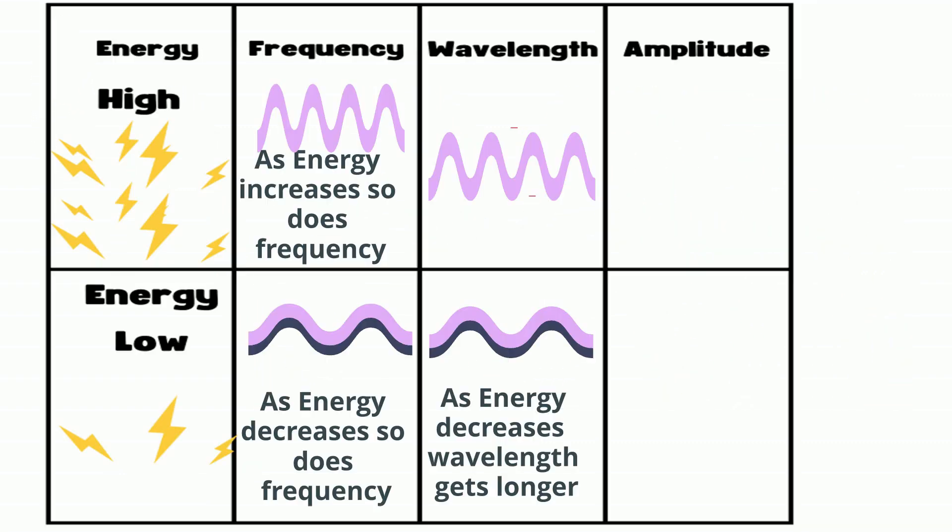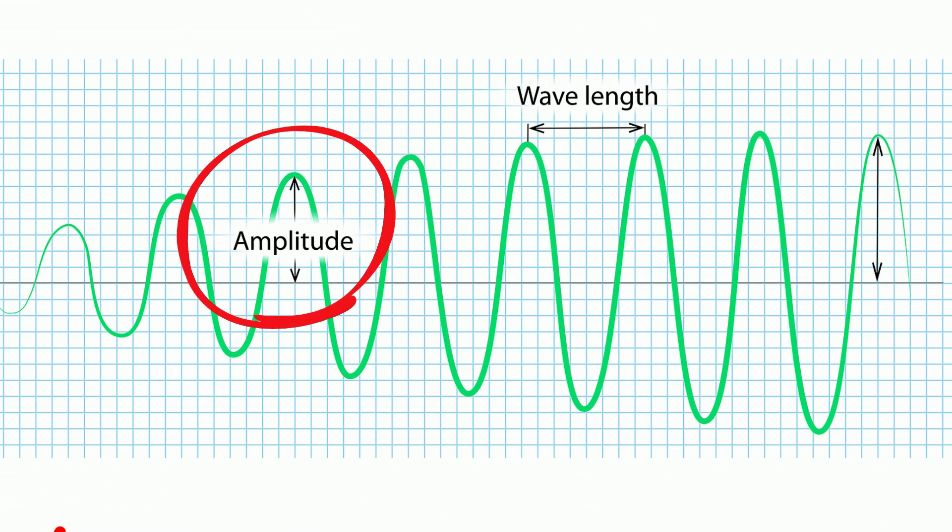As energy decreases, the wavelength will get longer and the frequency will get lower. Now let's take a look at amplitude. Amplitude is the measure of the height of the wave measured from the halfway point called the equilibrium or rest position.